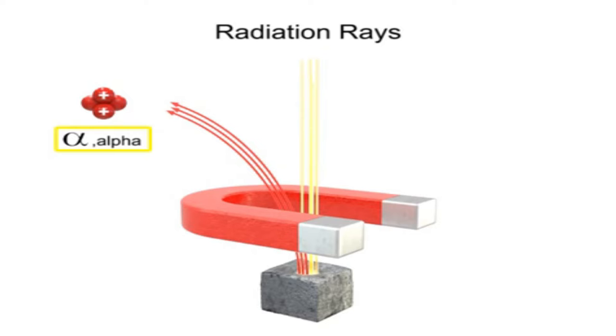Alpha rays carry particles originating from the nucleus of a radioactive atom. These particles consist of two protons and two neutrons. Essentially, they are positively charged helium atoms stripped of their electrons. The magnet causes these particles in the alpha ray to bend in one direction.